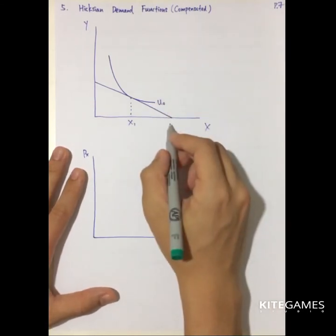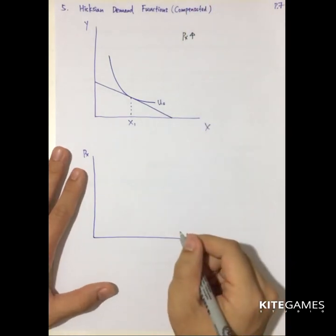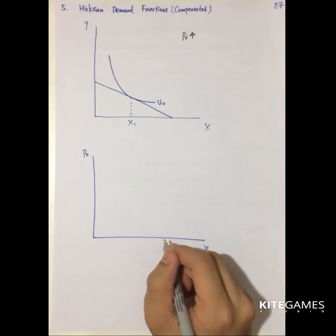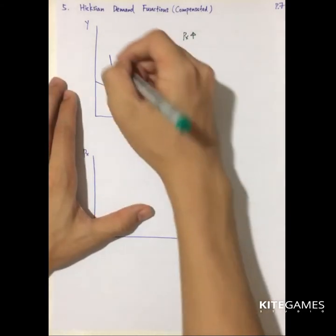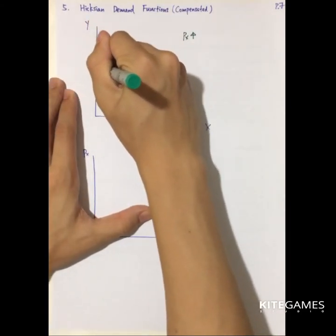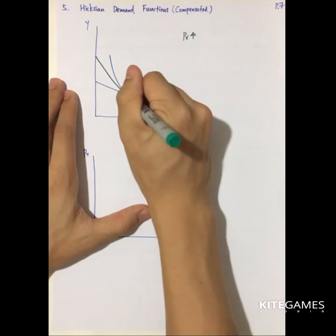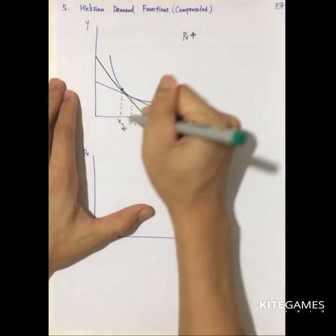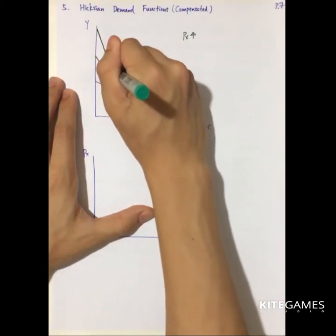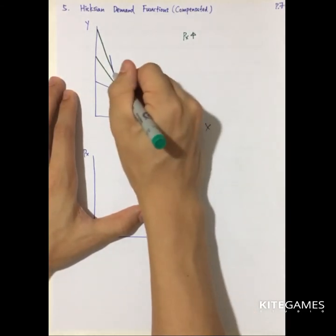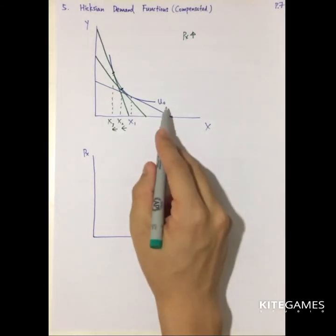In this example, if the price of X increases, we do not look at the money price but at the relative price. If the price of X increases, that means the price of Y decreases. Therefore the budget line will become steeper. You can see that X1 decreases to X2. If the price of X further decreases, you draw an even steeper budget line and go to X3. The most important thing is that you need to keep utility constant.